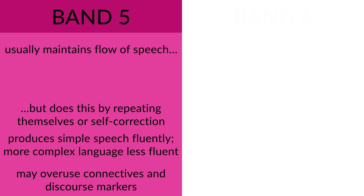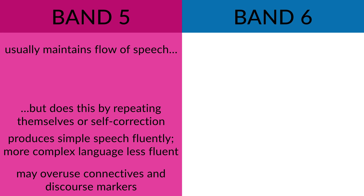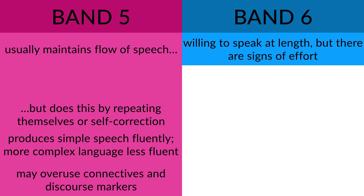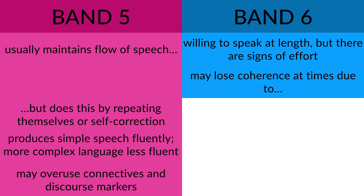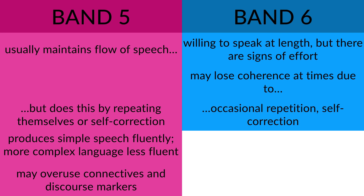Let's look at band 6 and compare it to band 5. At band 6, the typical IELTS candidate is willing to speak at length — they try to speak at length — but there are signs of effort. The IELTS examiner can see that it's difficult for them, but they do keep on trying. A band 6 candidate may lose coherence at times; the organisation and structure of their ideas might fall apart, often because they repeat themselves occasionally or occasionally self-correct. At band 5 there's a lot of repeating and self-correction, but at band 6 it's only occasional.